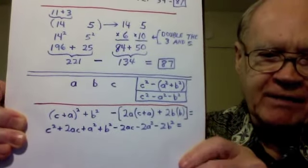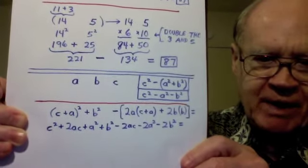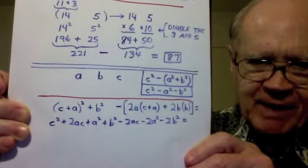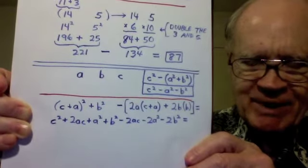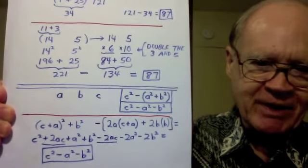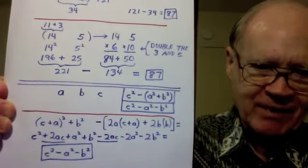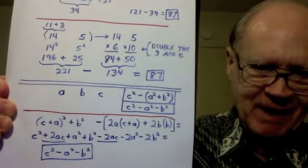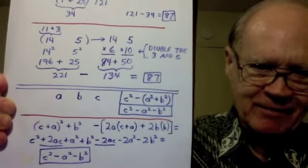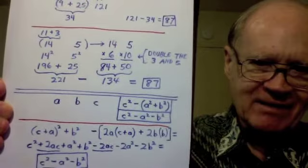Multiplying that out gives C² + 2AC + A² + B² - 2AC - 2A² - 2B². The plus 2AC and the minus 2AC add up to 0, so they disappear, and when I simplify that expression, I end up with C² - A² - B², which is the same as I got up above. So, that shows algebraically why this works.